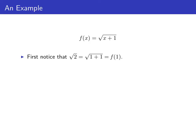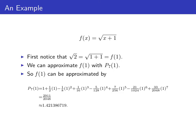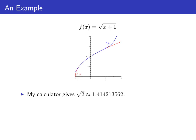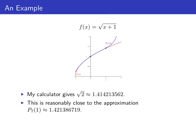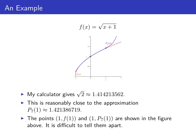The first thing to notice is that the square root of two is the square root of one plus one, and that's f(1). As long as we stay close to zero, p₇(x) is a good approximation to f(x), so we can approximate f(1) with p₇(1). Going back to our formula for p₇ and substituting one in for x, we get p₇(1) = 2911 divided by 2048, which is about 1.4214. Using a calculator, the square root of two is about 1.414. Looking at the points on the graphs corresponding to x = 1, p₇(1) and f(1) are really hard to tell apart, confirming that p₇(1) is a pretty good approximation.